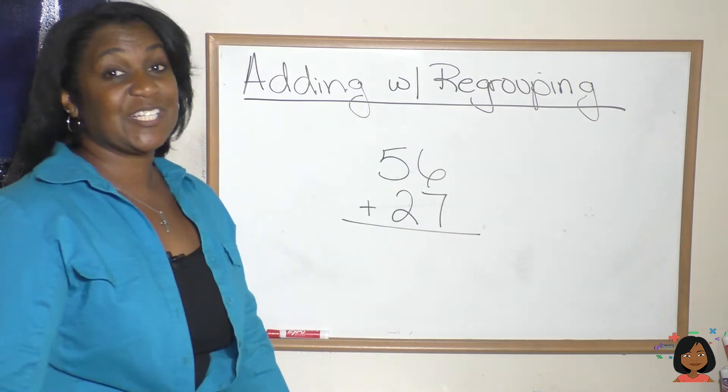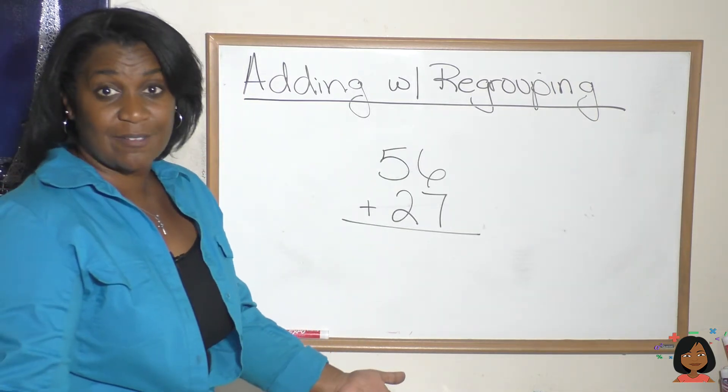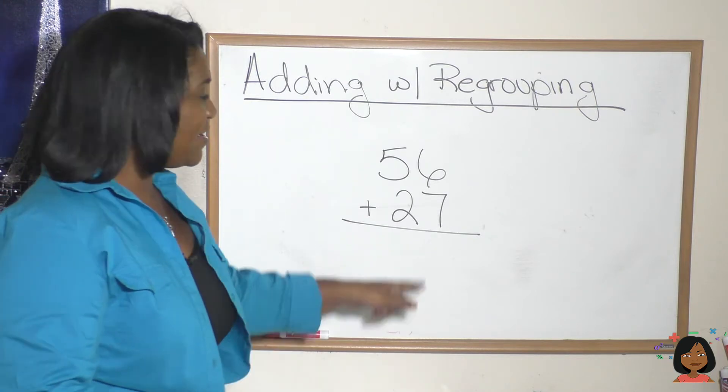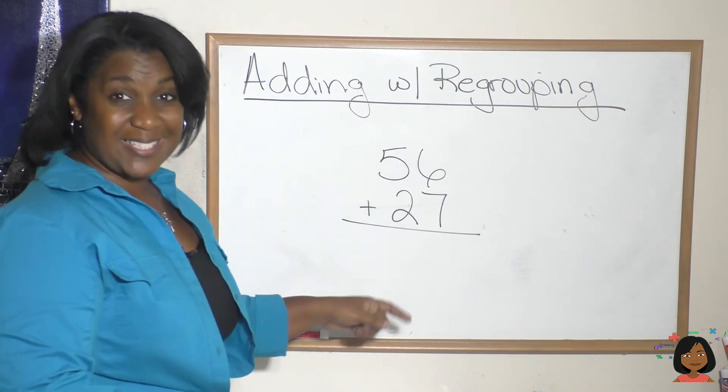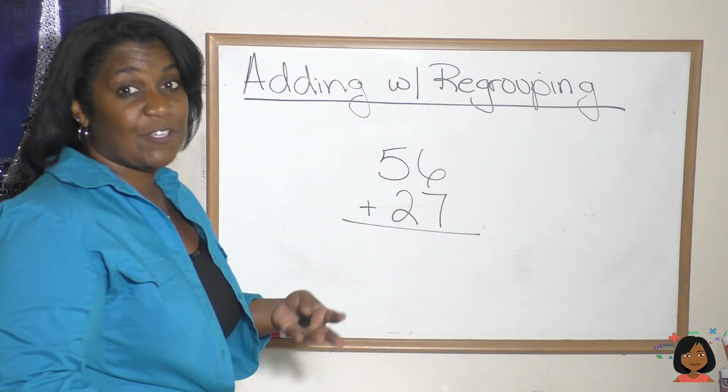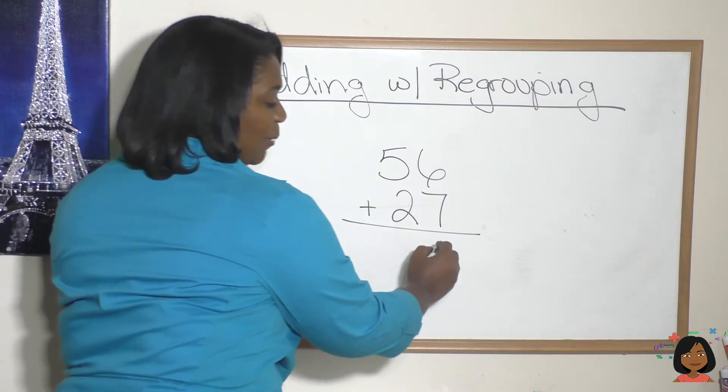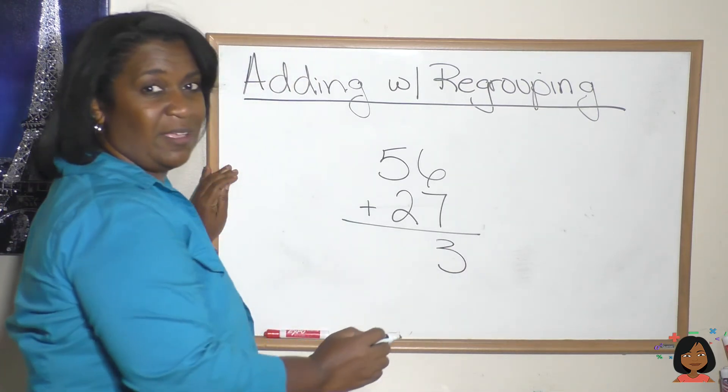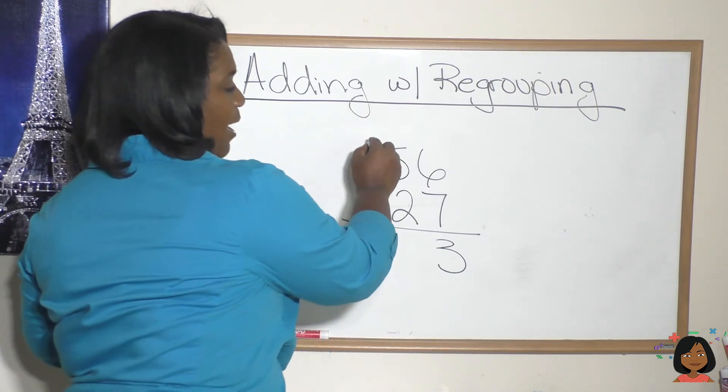One last problem. Let's try fifty six plus twenty seven. We always start in what place? The ones place. Let's do it. Six plus seven is thirteen. So what do we put down here? The three and we take that ten and bring it up to the top.